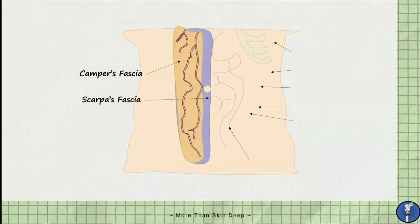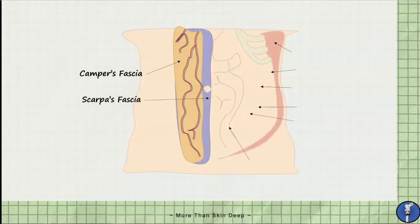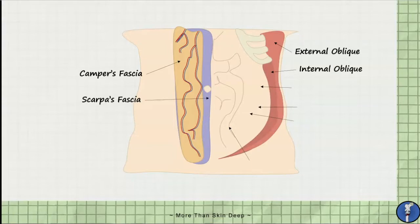Deep to Scarpa's fascia are the muscular layers of the anterior abdominal wall. This includes the external oblique, which is the most superficial, the internal oblique in the middle, and the transversus abdominis muscle.